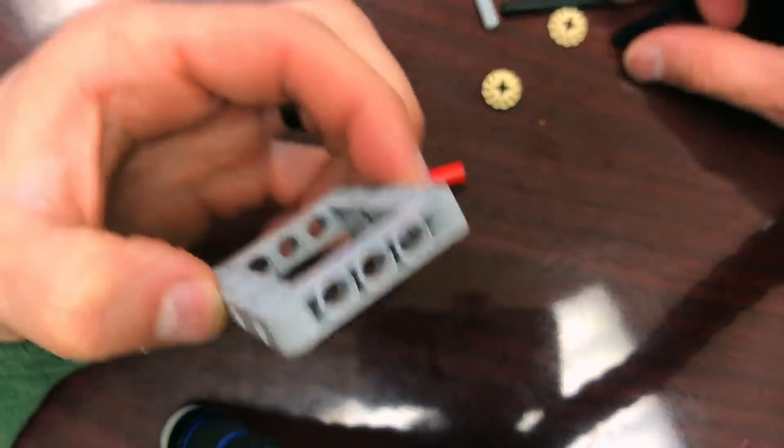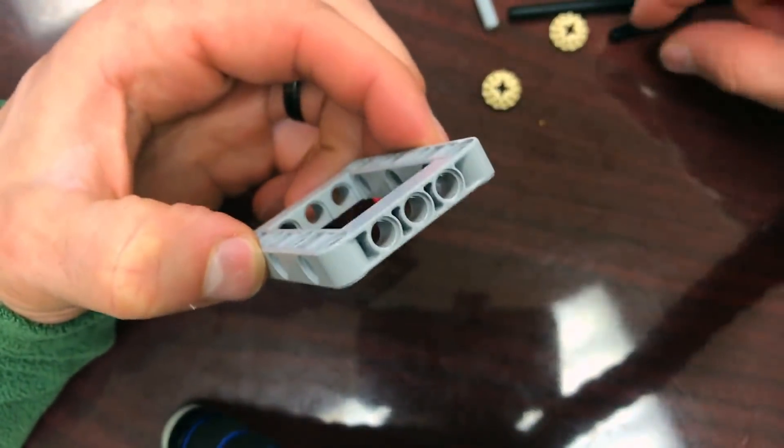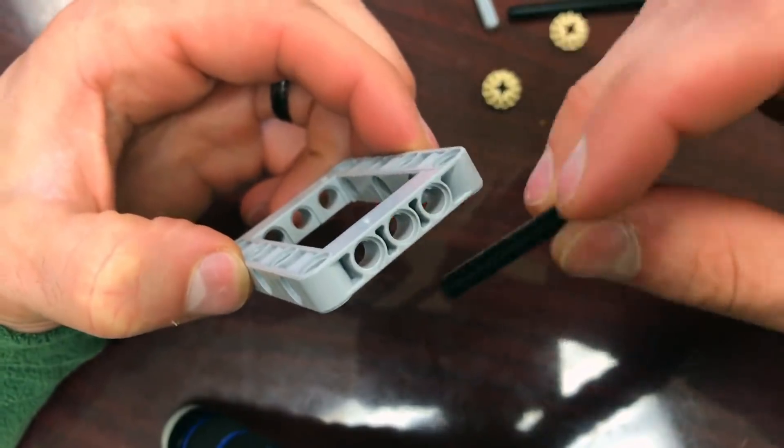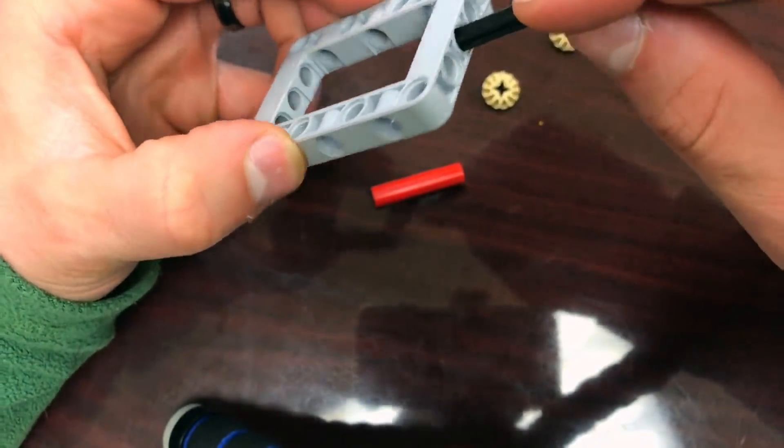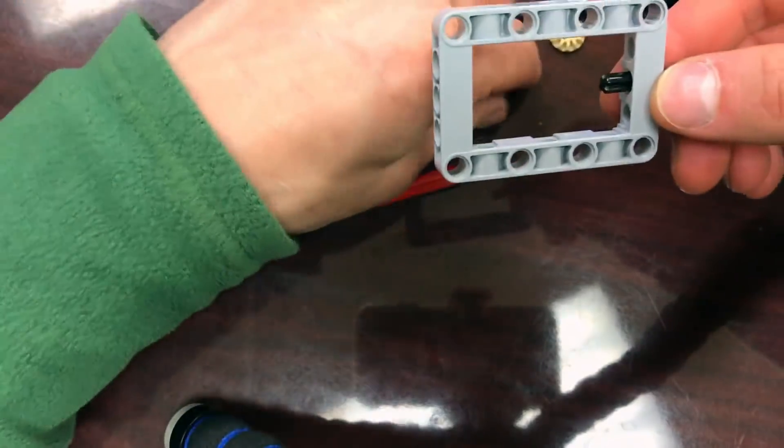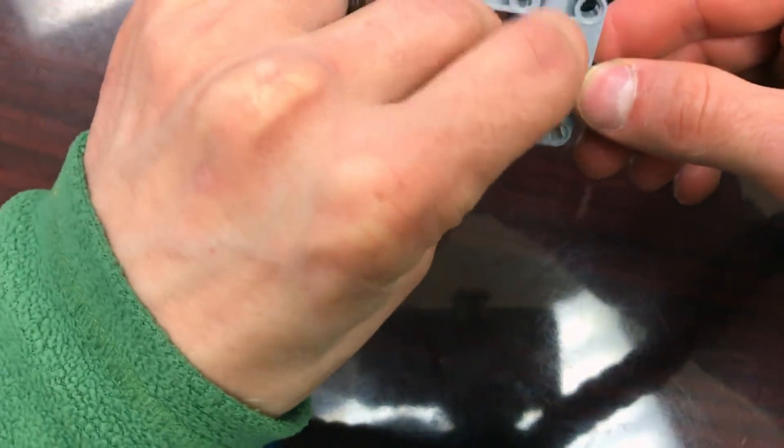Then I'm going to grab the picture frame and through the middle hole I'm going to put the number 4 black axle, that's the shorter black axle, through the middle hole and attach one of the gears to it.